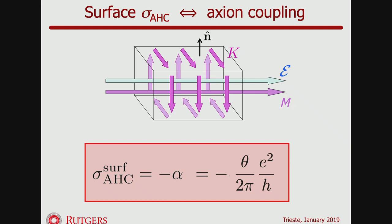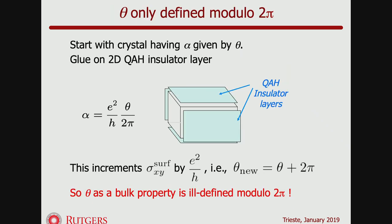The surface anomalous Hall conductivity is really the same thing as the magnetoelectric coupling, up to a sign convention. These two things, when you throw away the Kubo terms, are identical. From a physical point of view, we can understand why θ is well-defined modulo 2π: if you glue quantum anomalous Hall layers onto the surface, each carrying e²/h of anomalous Hall conductivity, you effectively increase the total magnetoelectric coupling of the material by taking θ to θ + 2π.